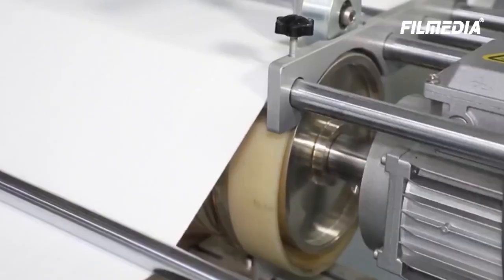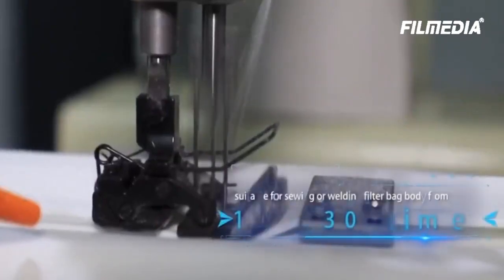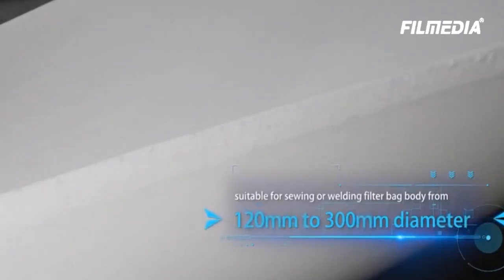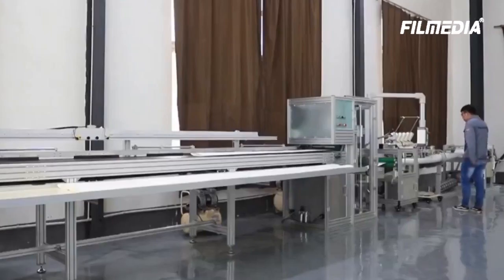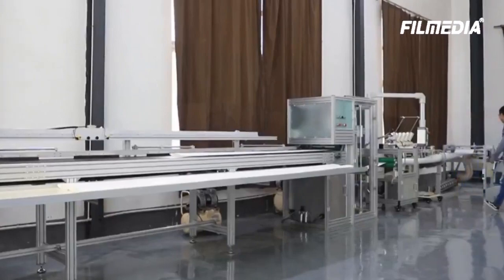Equipped with brand new filter bag body forming mold, this line is suitable for sewing or welding filter bag body from 120 millimeters to 300 millimeters diameter with good performance of seam sewing and bag body forming.